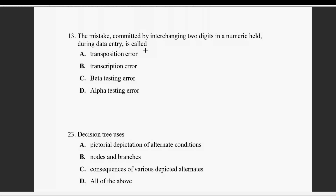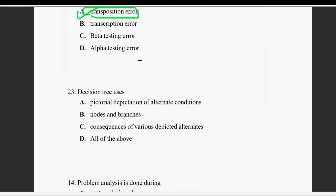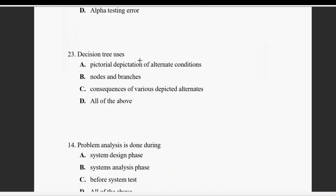Question number thirteen: the mistake committed by interchanging two digits in a numeric field during data entry — this type of two-digit mistake is called transposition errors. The definite right answer is A.